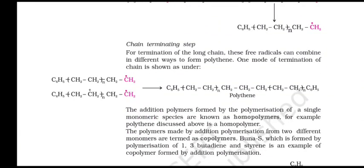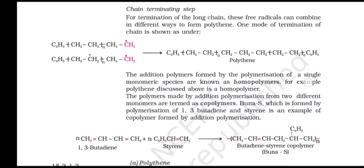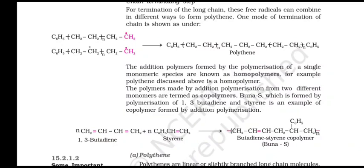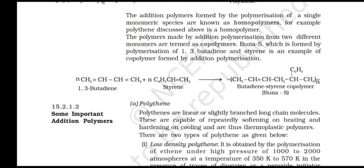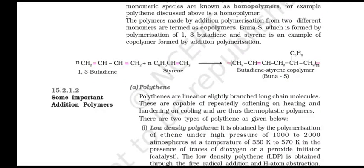This final step is called the chain terminating step. The sequence of steps involved in the formation of polythene is depicted as follows. For termination of the long chain, these radicals can combine in different ways to form polythene. Addition polymers formed by polymerization of a single monomer species are known as homopolymers — for example, polythene. Polymers made by addition polymerization from two different monomers are called copolymers. Buna-S is formed by copolymerization of 1,3-butadiene and styrene, and is an example of a copolymer formed by addition polymerization.